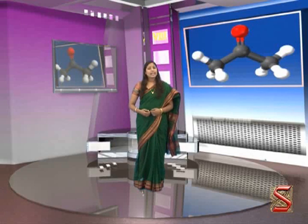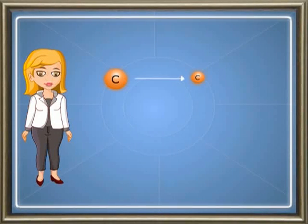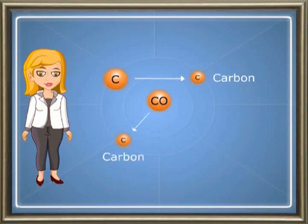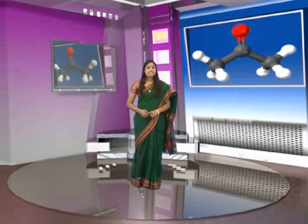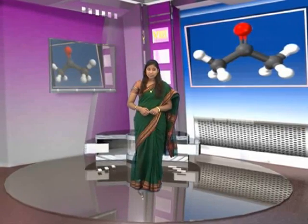Let us see the symbols of some elements along with their atomic weights. The symbol for an element represents the element either in pure state or in combined state. For example, C stands for one atom of carbon in the elemental form, and Co stands for one atom of carbon in combination with one atom of oxygen.